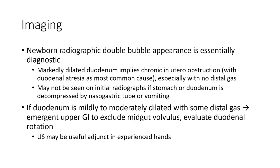For imaging, newborn radiographs show a classic double bubble appearance with air-fluid levels. Markedly dilated stomach and duodenum require consideration of in utero obstruction, with duodenal atresia as the most common cause, especially with non-distended distal bowel. If the duodenum is mildly to moderately dilated with some distal air, images may suggest a web or malrotation.